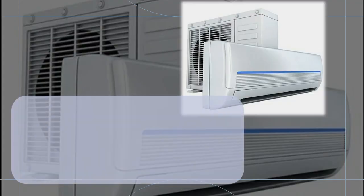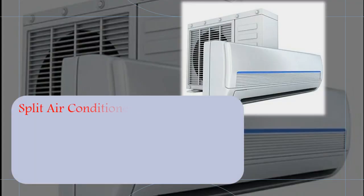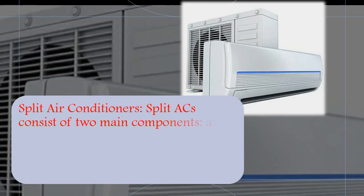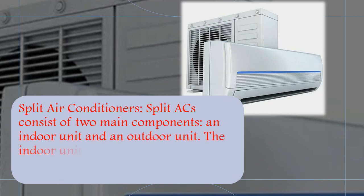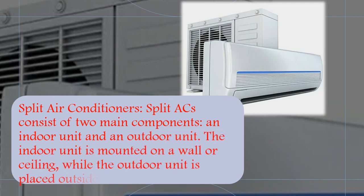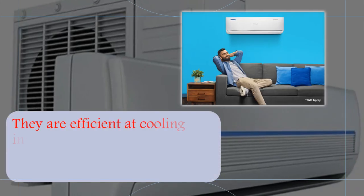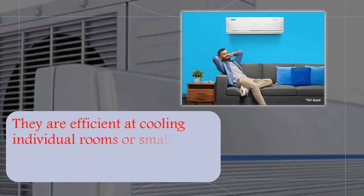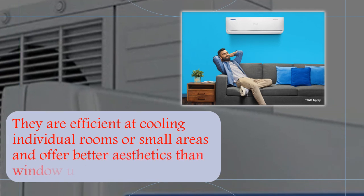Split air conditioners. Split ACs consist of two main components: an indoor unit and an outdoor unit. The indoor unit is mounted on a wall or ceiling, while the outdoor unit is placed outside the building. They are efficient at cooling individual rooms or small areas and offer better aesthetics than window units.